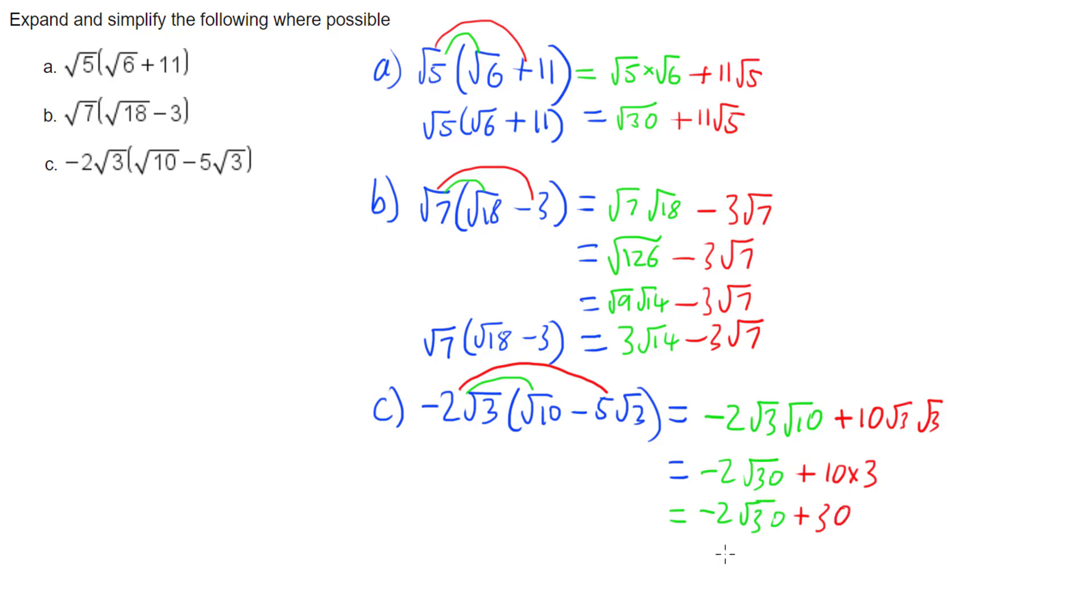So my answer is that negative 2 root 3 times root 10 minus 5 root 3 equals 30 minus 2 root 30. We like to keep positive numbers at the front if possible, so I've swapped these two terms. So there we have a few examples of using the distributive law to expand brackets with surds.